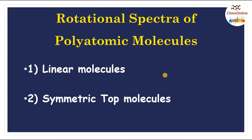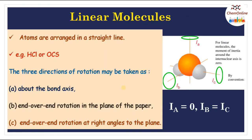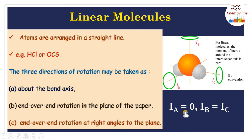Next, we discuss the rotational spectra of polyatomic molecules, including linear molecules and symmetric top molecules. Linear molecules are those in which atoms are arranged in a straight line — for example, HCl, OCS (carbon oxysulfide), CO₂, etc. We take three principal moments of inertia: Iₐ, I_b, and I_c. Iₐ is about the bond axis (molecular symmetry axis), and for linear molecules, Iₐ = 0.